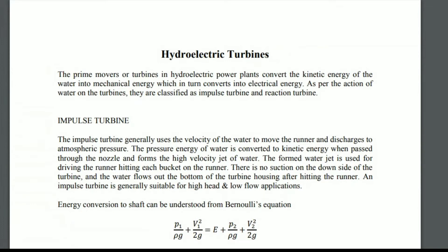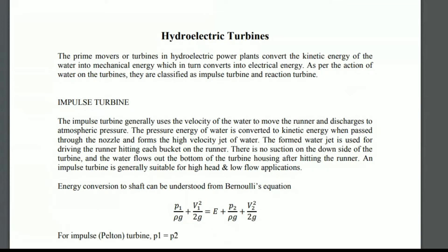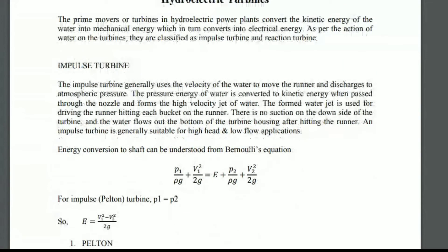The small amount of discharge relates to when we choose the impulse kind of turbine. The most commonly used impulse turbine is the Pelton wheel, also called the Pelton turbine.